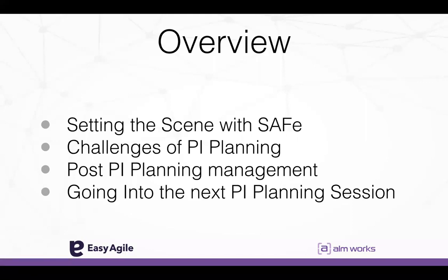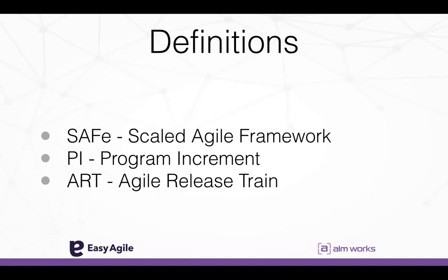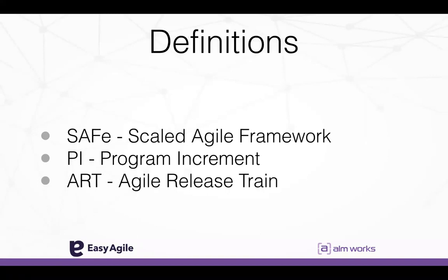Before we dive in, just some quick definitions. SAFe stands for the Scaled Agile Framework — one of a number of frameworks for applying agile processes to larger organizations. PI stands for Program Increment, a fixed time box for building and validating a full system increment where you can demonstrate value and get fast feedback. And the ART is the Agile Release Train, a cross-functional team of teams aligned along value streams that work together to reach defined goals.